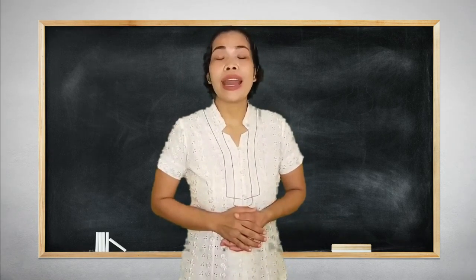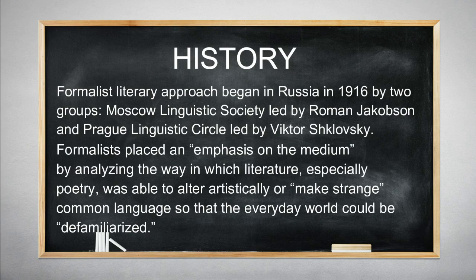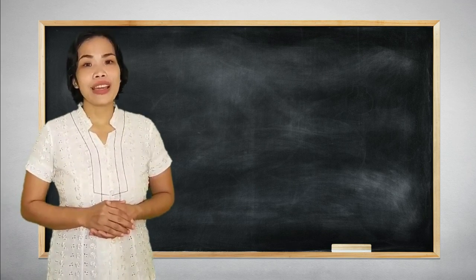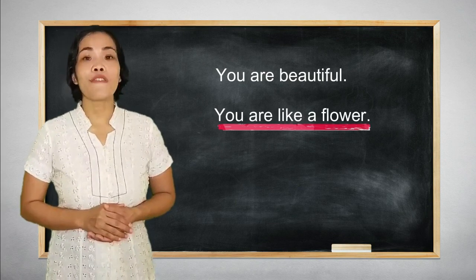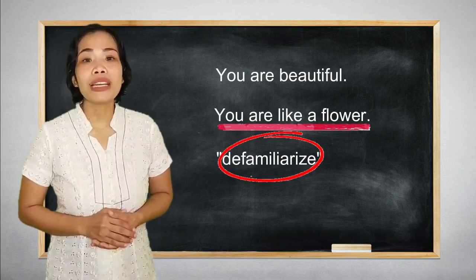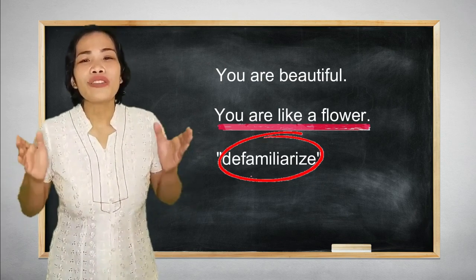Formalist literary approach began in Russia in 1916 by two groups: the Moscow Linguistic Society, led by Roman Jakobson, and the Prague Linguistic Circle, led by Viktor Shklovsky. Formalists emphasized the medium by analyzing the way in which literature, especially poetry, was able to artistically make strange common language so that everyday words could be defamiliarized. For example, instead of saying 'you are beautiful,' you say 'you are like a flower.' That is what defamiliarizing is all about — you try to understand metaphors, simile, and all that, and understand the text without taking into consideration outside influences. You are fixed on the text alone.